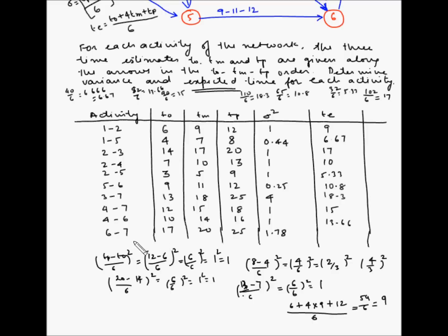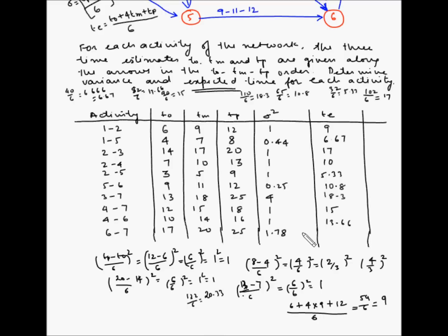For activity 6-7: (17 + 4×20 + 25) / 6. 4 multiplied by 20 is 80, plus 25 is 105, plus 17 is 122. 122 divided by 6 equals 20.33. So the expected duration for activity 6-7 is 20.33.